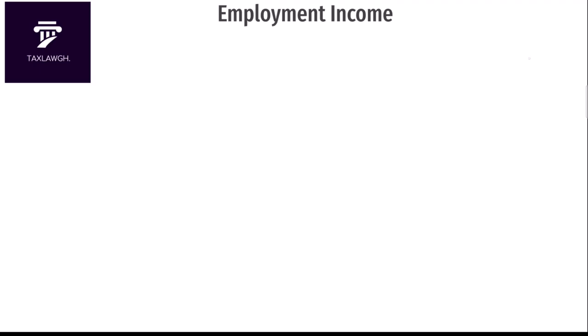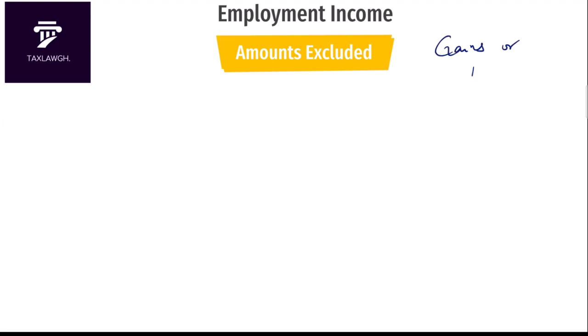Let's return to employment income taxation. Before we talk about what is excluded, let me mention what is included. That is a very simple question to answer: the general rule is that all gains or profits from an employment should be included in an employment income determination unless specifically exempted. All gains or profits from an employer-employee relationship must be included in determining the accessible employment income of an employee for a year of assessment or for part of a year of assessment.